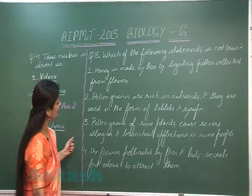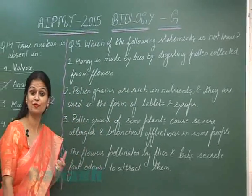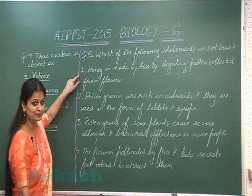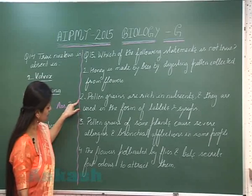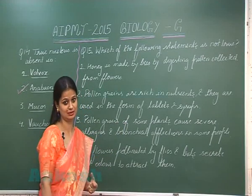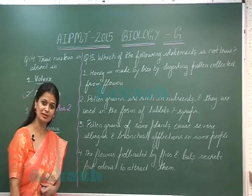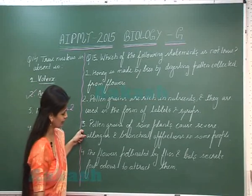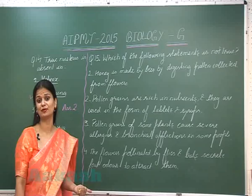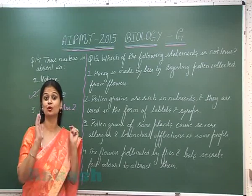Option one: honey is made by bees by digesting pollen. However, honey is formed by bees from nectar, not from pollen — so this statement is wrong. Option two: pollen grains are rich in nutrients. Yes, pollen grains have good fats and are used as food supplements. Option three: pollen grains of some plants cause severe allergies. Yes, several plants like Chenopodium and Parthenium are responsible for allergic reactions.